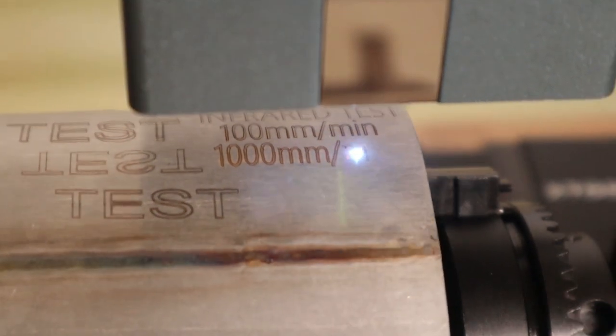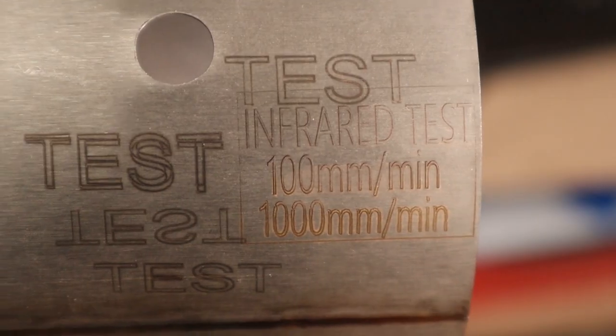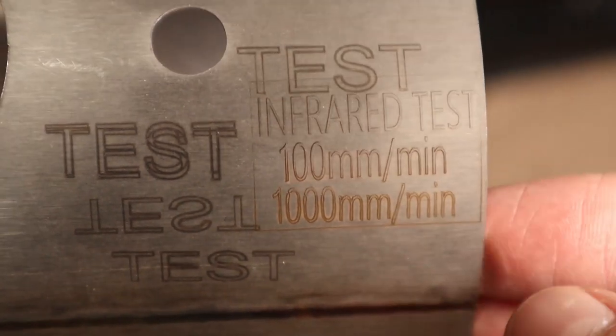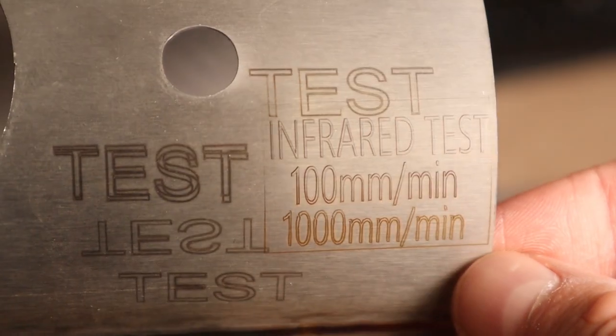The word test, made with thicker lines, was made with the 10 watt X-Tool laser in my review of the X-Tool RA2 rotary attachment. You can see that the infrared laser makes much thinner lines and it is able to engrave at higher speeds.